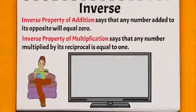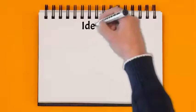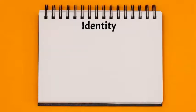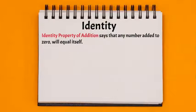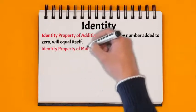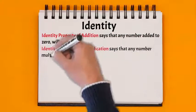Next we have the identity property. The identity property of addition says that any number added to zero will equal itself. And the identity property of multiplication says that any number multiplied by one will equal itself.